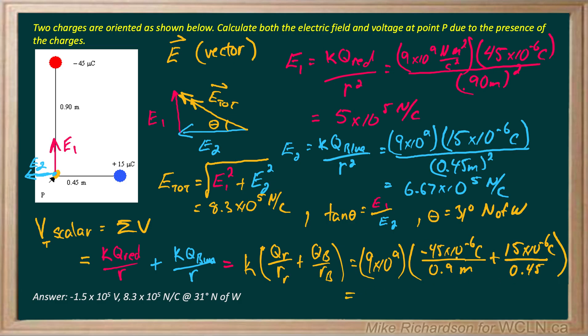So as long as I've got my signs in there I should get the right answer. You end up getting an overall potential or voltage of negative 1.5 times 10 to the fifth volts, and notice there's no direction associated with that because it's a scalar.